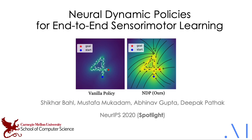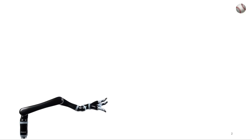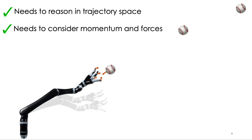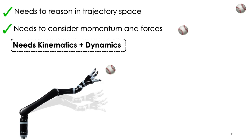We present Neural Dynamic Policies for end-to-end sensorimotor learning. Consider a robot trying to catch a ball. Not only must it know when and where it should intercept the ball, but it also has to reason about its momentum and forces when trying to catch the ball. Hence, we need reasoning about both kinematics and dynamics.